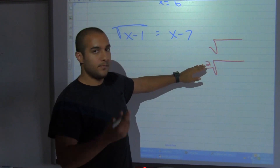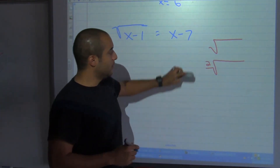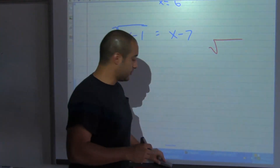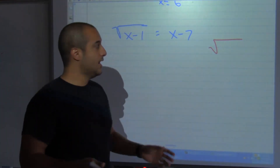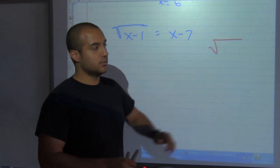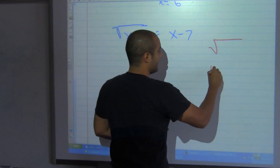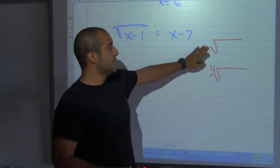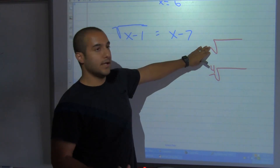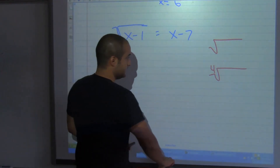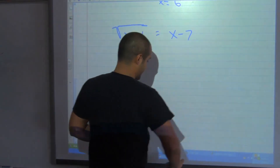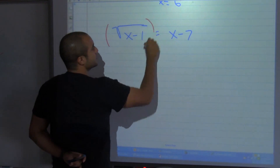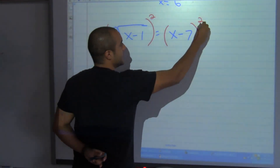We use square root so much that we've agreed we don't have to write the 2 there. But if we're taking any other kind of root — like the fourth root — then we have to write it in. It's accepted that if it's blank, it's a square root. So here I have the square root of x minus 1, and in order to get rid of a square root, I need to square both sides.